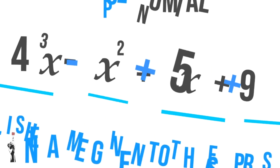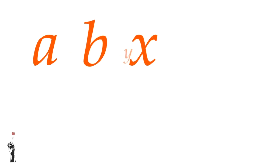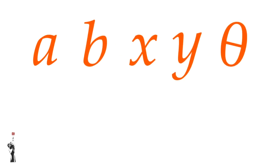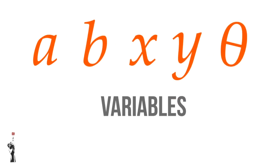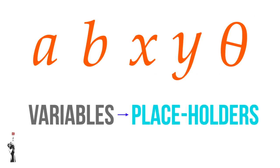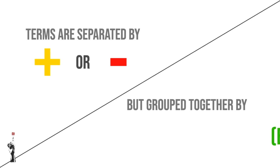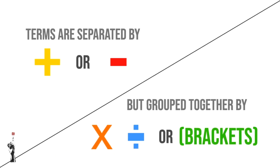Let's recap on what we just learned. A, B, X, Y, theta — all of these are variables which work as placeholders for any value. Each different variable represents a different value. Terms are separated by a plus or a minus, but are grouped together by a multiplication, division, or brackets.